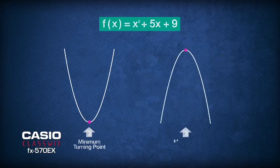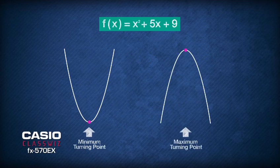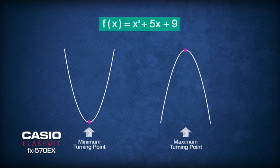The minimum or maximum value of a quadratic function can be easily found from the completed square form of the function. But how do we complete the square?